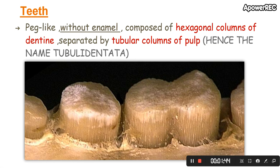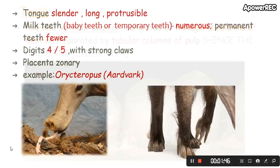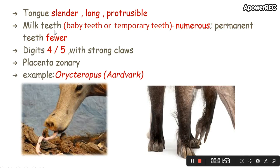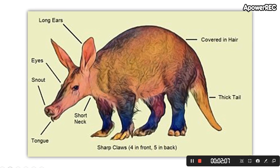The tongue is slender, long, and protrusive. Milk teeth — also called baby teeth or temporary teeth — are numerous, but permanent teeth are fewer. The digits are four or five, with strong claws.